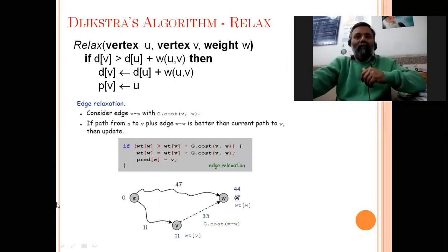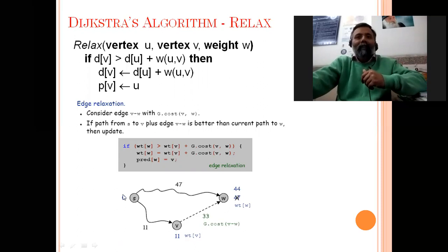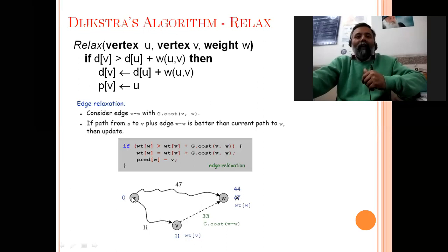In Dijkstra's algorithm, the very central operation is the relax function. To understand it, take this example: suppose we have source node s and two other nodes w and v. If we select one path we get a shortest path weight of 47, but if we select the path through v — that is, 11 to v and then v to w which is 33 — then 11 plus 33 equals 44. So going one way gives 47 and the other gives 44.